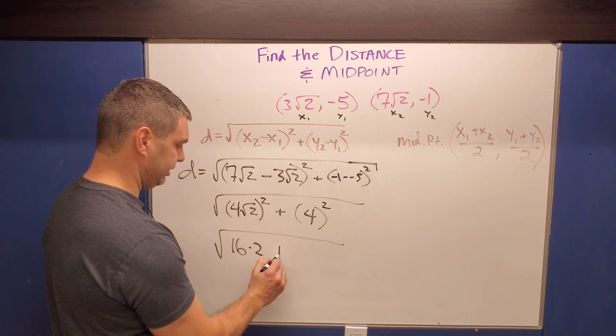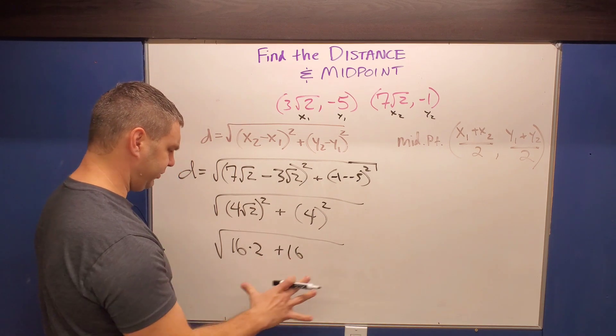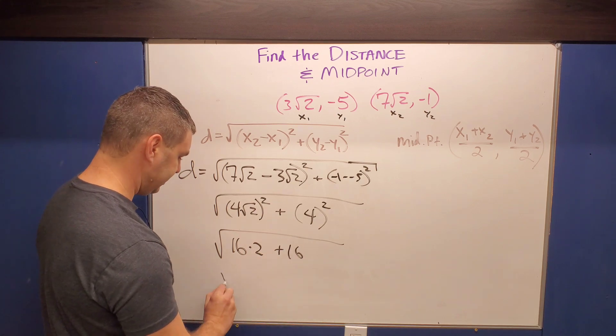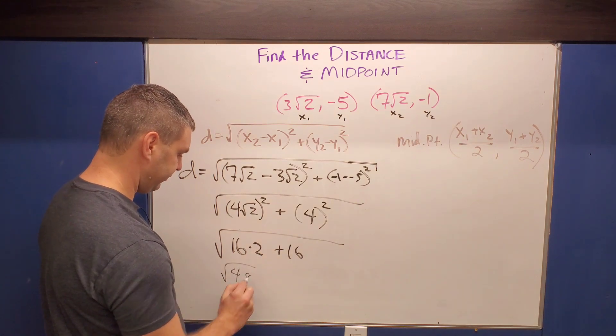Over here, four squared is just gonna be 16. So if we simplify this a little bit further, 16 times two is 32, 32 plus 16 is 48. So we have the square root of 48 now.